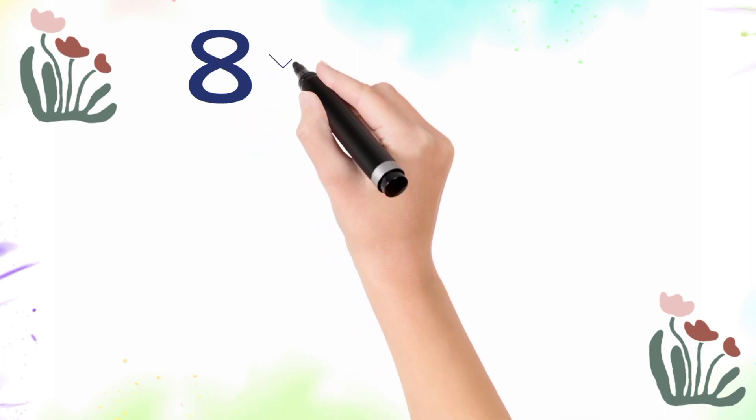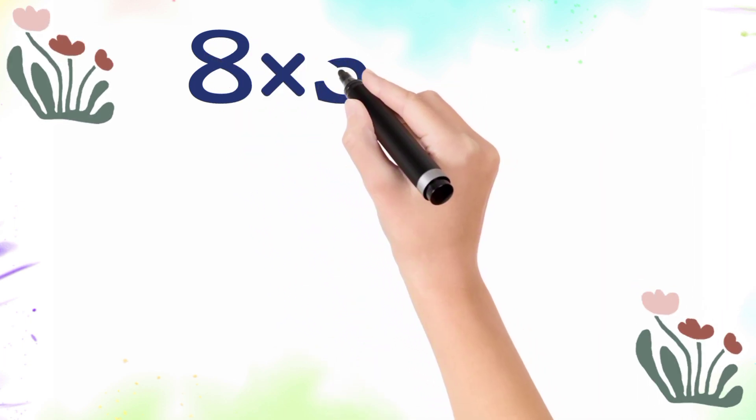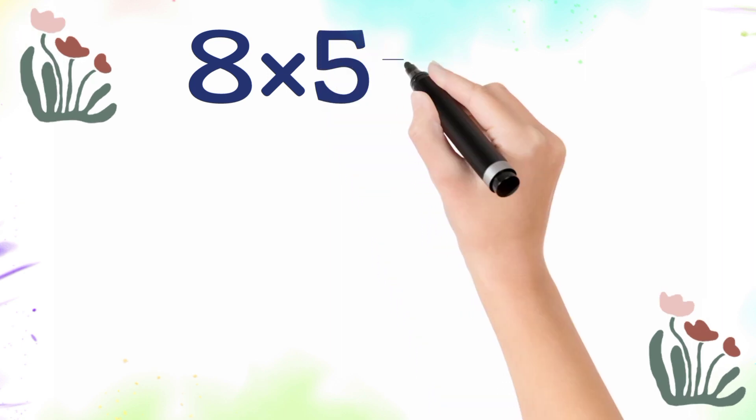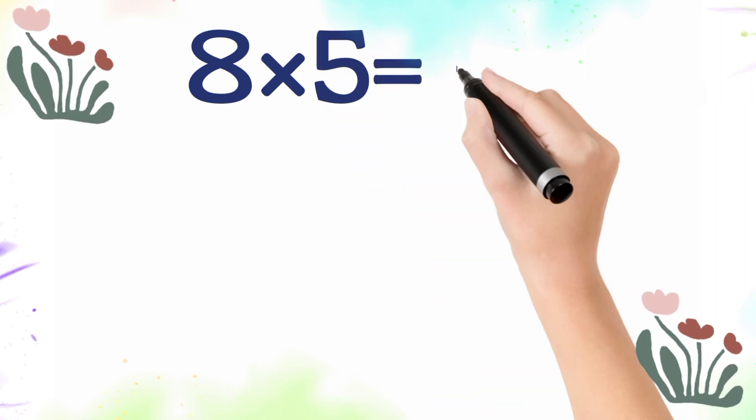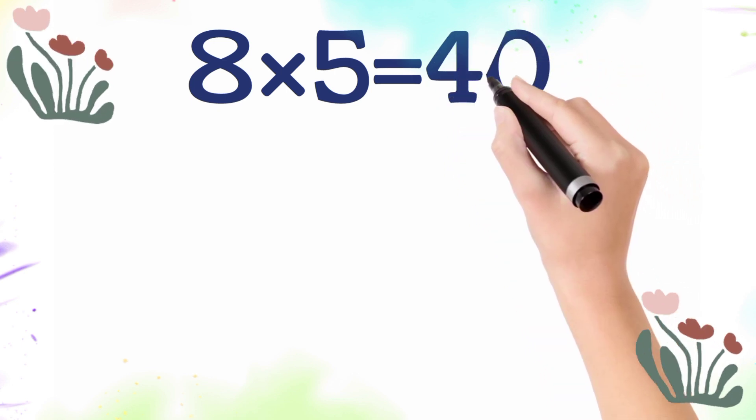8 multiplied by 5 is equal 40. So 8 times 5 is 40.